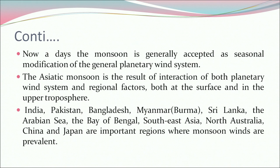The Asiatic monsoon is the result of interaction of both the planetary wind system and regional factors, both at the surface and in the upper troposphere. India, Pakistan, Bangladesh, Myanmar, Sri Lanka, the Arabian Sea, the Bay of Bengal, Southeast Asia, North Australia, China, and Japan are important regions where monsoon winds are prevalent.